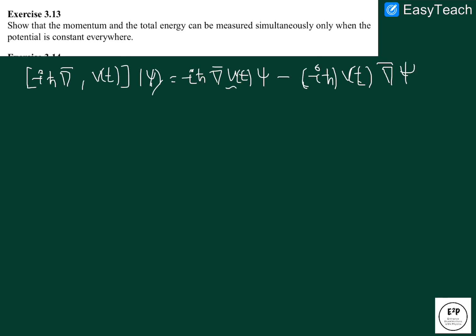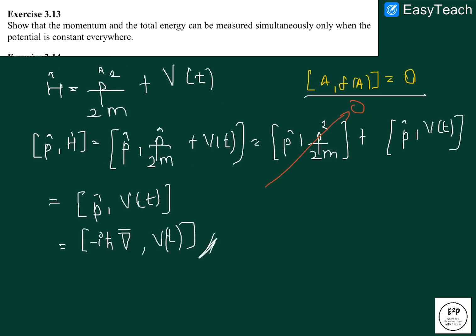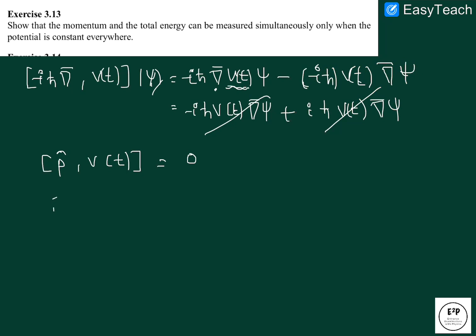Now since this potential is not dependent on any position and this gradient is based on the position, this is independent of position. So it will become minus i h bar V t gradient of psi, which will be zero. This implies that momentum and potential that is constant in space do commute.